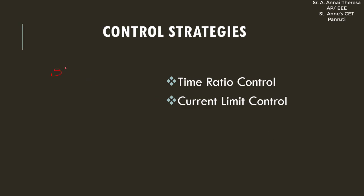For the step-up chopper, V0 is equal to Vs multiplied by 1/(1 − alpha). In the step-down chopper, V0 is equal to alpha times Vs. From this we can understand how we can change the output voltage by changing alpha. By changing this alpha value, we can vary the output voltage and get a variable output voltage.